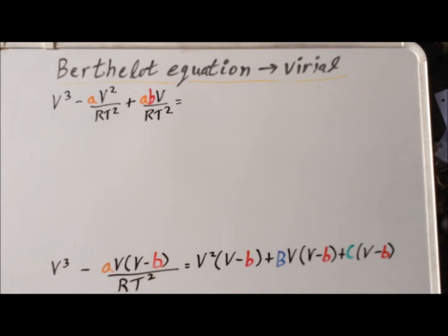Simplifying the left-hand side, we use the distributive law, and we get V cubed minus AB squared over RT squared plus AB times V divided by RT squared. And when we multiply out the terms on the right-hand side, we are going to take the expediency of lining up the terms in the correct powers of V to make simplification easier.